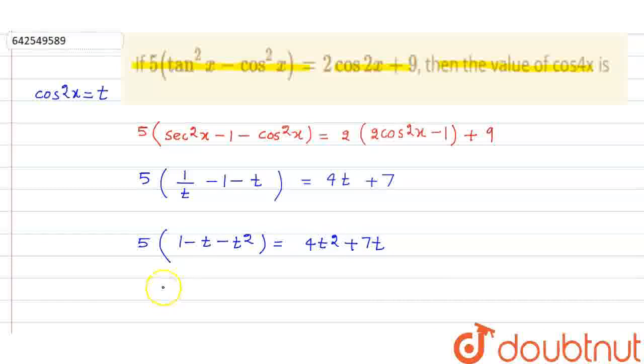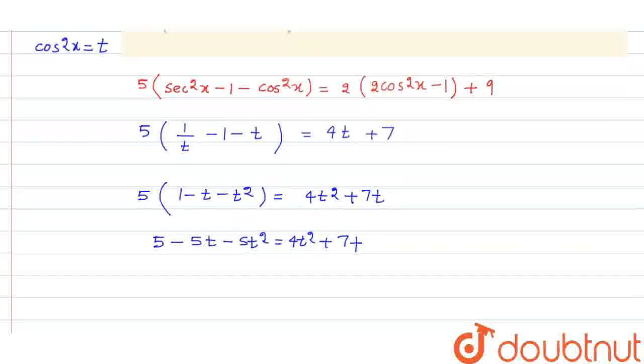So this basically becomes 5 minus 5t minus 5t square is equal to 4t square plus 7t. So solving we get 9t square plus 12t minus 5 is equal to 0.